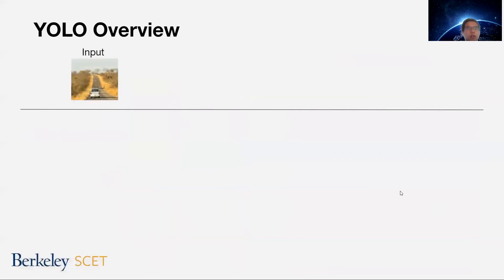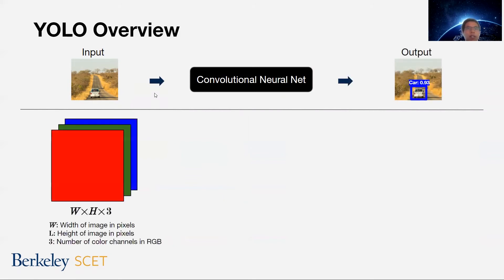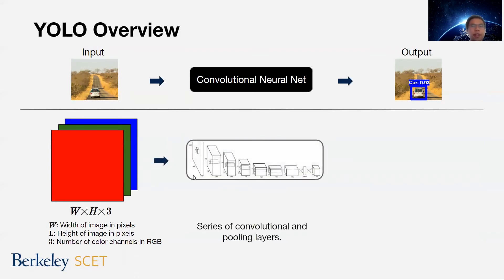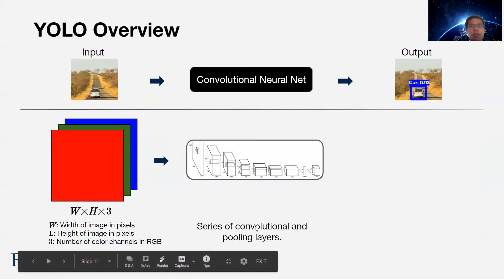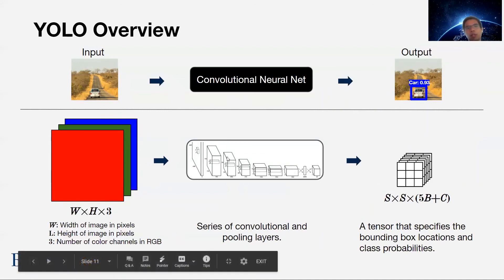The YOLO algorithm overview: we have an input image, pass it through a convolutional neural net, and get an output tensor. The image is broken down into width and height in pixels with RGB — three color channels — so it becomes a three-sheet tensor. We pass this into a convolutional neural net, which is a series of convolutional and pooling layers, and it predicts the S by S by (5B plus C) tensor. We know the inputs and outputs; the goal is just to train this CNN portion when building our model.